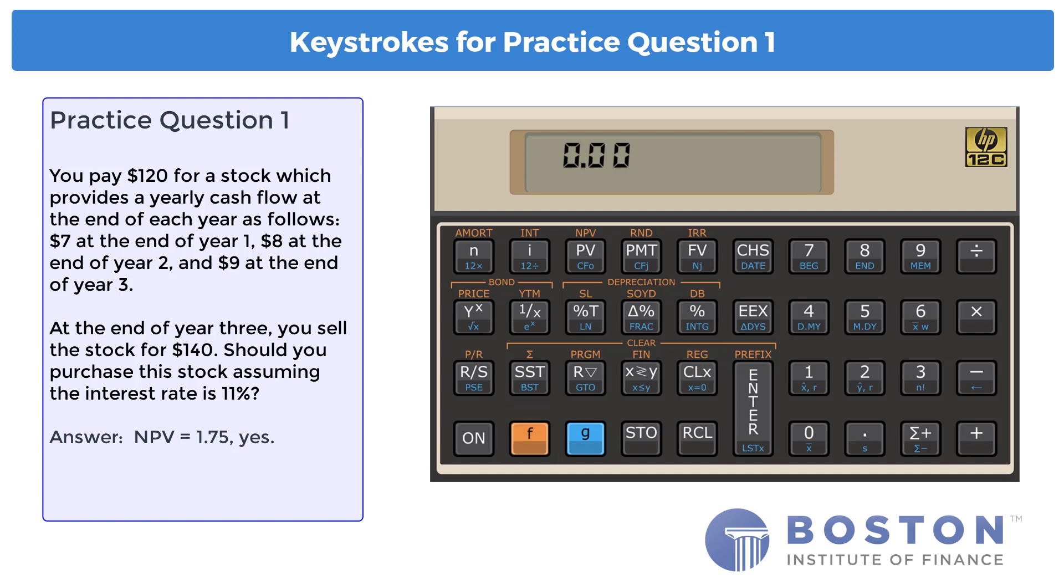Here are the keystrokes for practice question 1. Clear all registers. Enter 120, change sign, prefix G, going into CF0. 7, prefix G, CFJ. 8, prefix G, CFJ. $9 is combined with $140, so enter 149, prefix G, into CFJ. Enter the interest rate, 11, and press I. The final step is to press prefix F for NPV. The result is 1.75.